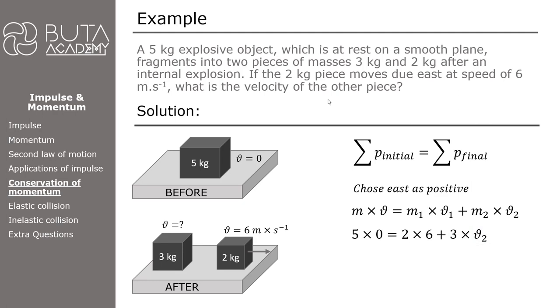By solving the equation, we calculate that the velocity of the 3 kg piece is negative 4 m per second. The answer has a negative value, meaning the 3 kg object is moving west. Therefore, velocity of the 3 kg object is 4 m per second west.